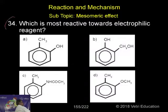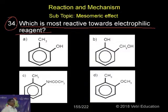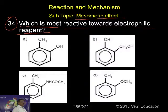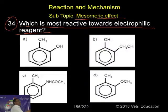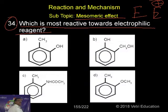Question 34: which compound is most reactive towards an electrophilic reagent? This comes under the mesomeric effect, because it involves aromatic compounds. An electrophilic reagent can simply be represented as E or E+, where E means electrophile and E+ means the electrophilic ion.